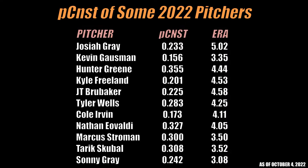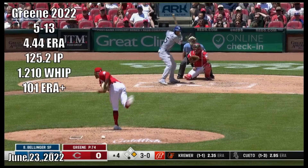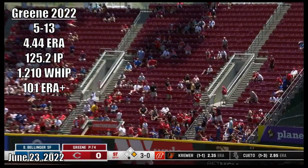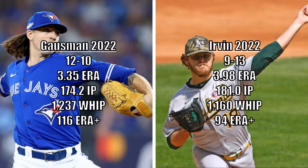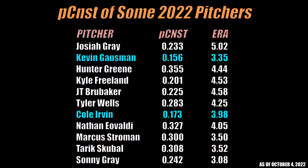If you're interested, here are the consistencies of some other pitchers throughout the league this year. Some standouts on the inconsistent side are Nathan Eovaldi and Hunter Greene. I'm not too surprised to see Greene so high — Reds fans have echoed what the stat shows here. It is his rookie season though, and his last six or so starts looked pretty strong. On the consistent side, we see Cole Irvin and Kevin Gausman. Gausman has been great this season and has felt really reliable in a Jays rotation that wavered at times.